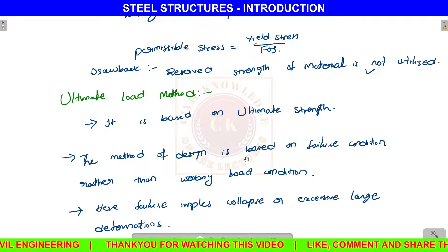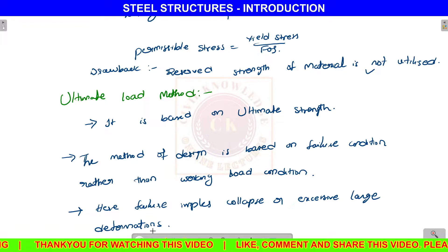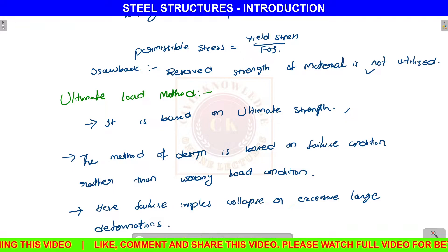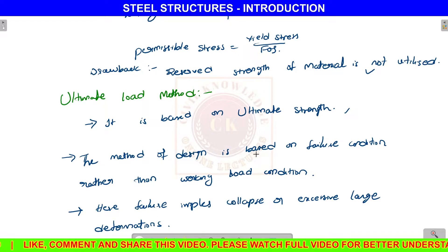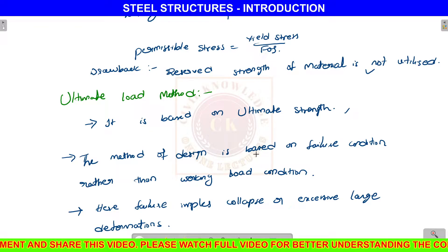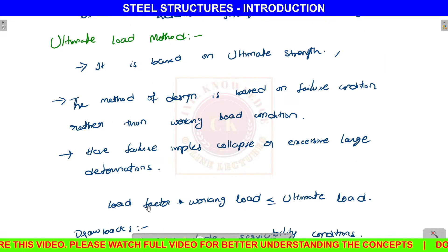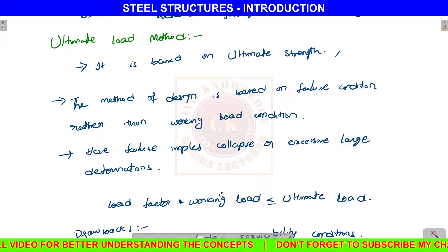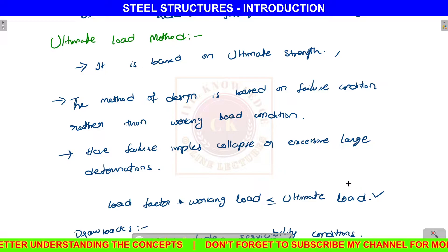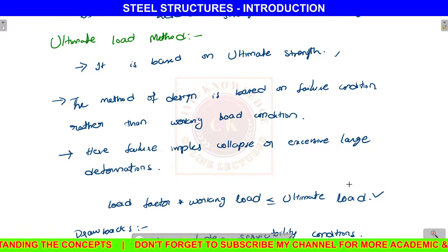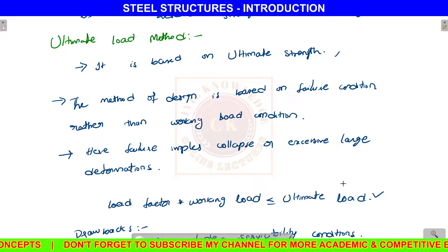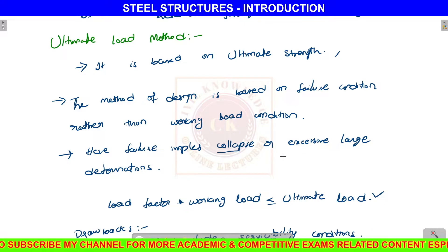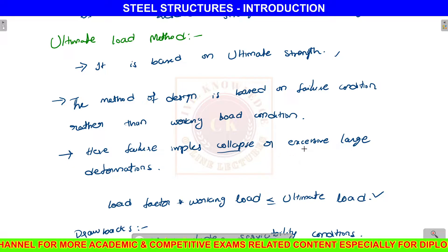What is the ultimate load method? This method is based on the ultimate strength. We balance the load applied using a load factor — we multiply the service loads by the load factor to get the ultimate load. This means you account for serviceability condition as well as collapse failure, which includes excessive large deformations, failure, and collapse.